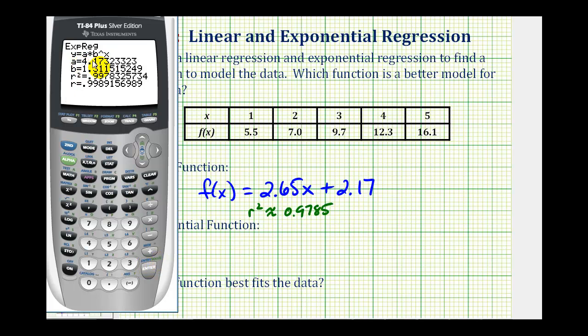Here's the value of a, here's the value of b, and here's the r-squared value. It's approximately 0.9978. Let's go ahead and write this down as well.